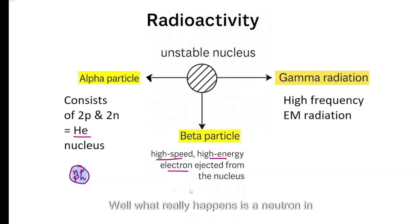Well, what really happens is a neutron in the nucleus will split into a proton and an electron and that electron comes out as a beta particle.